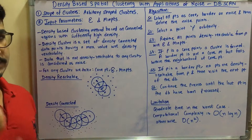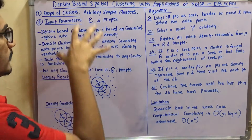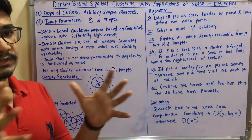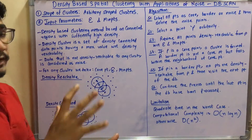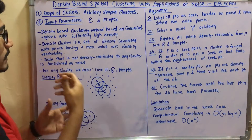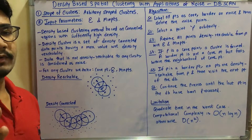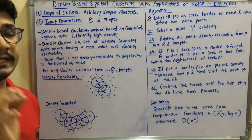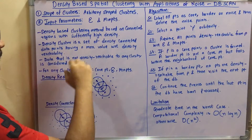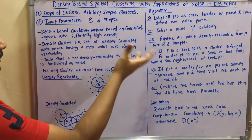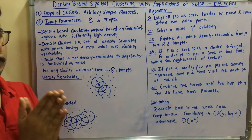DBSCAN is primarily concentrated on regions having sufficiently high connected density points. A density cluster is defined as a set of density-connected data points having a maximum value with respect to density reachability. You need to understand two key concepts: density reachability and density connected. Any data point that is not density reachable to any cluster is considered as noise.